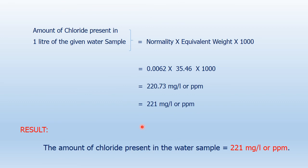Amount of chloride ion present in 1 litre of the given water sample is calculated as: normality × equivalent weight × 1000. The factor 1000 converts grams to milligrams. So 0.0062 × 35.46 × 1000 gives us 221 milligrams per litre. The amount of chloride ion present in the water sample is 221 mg/L.